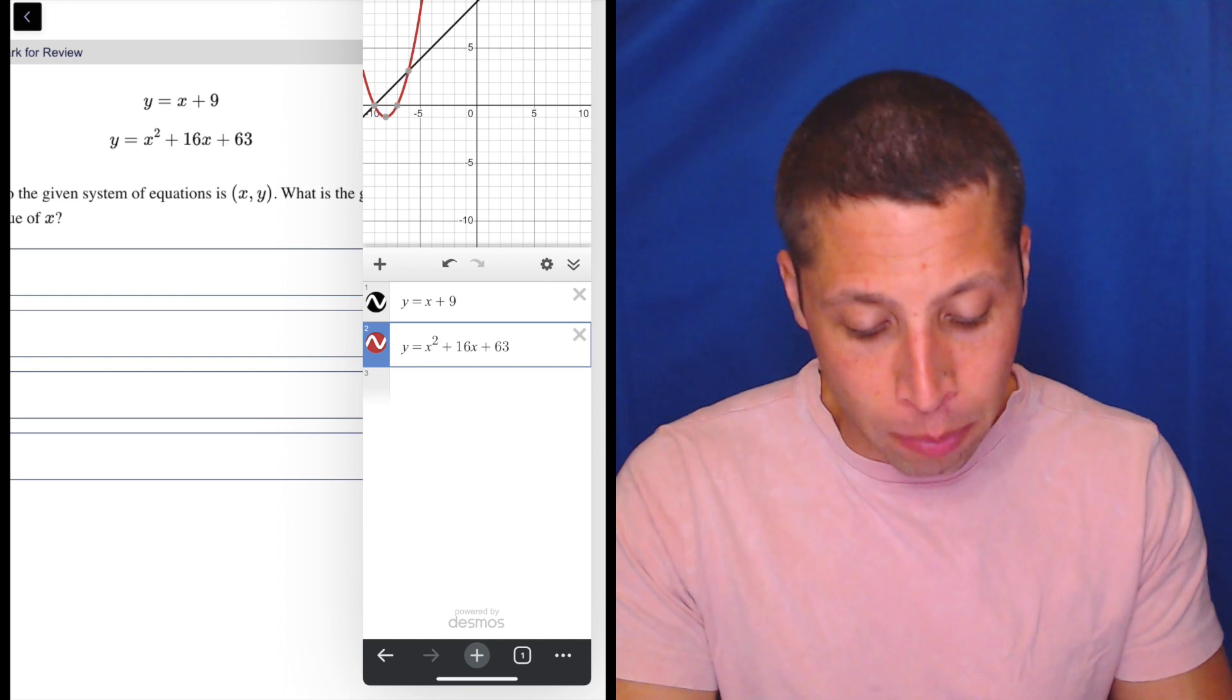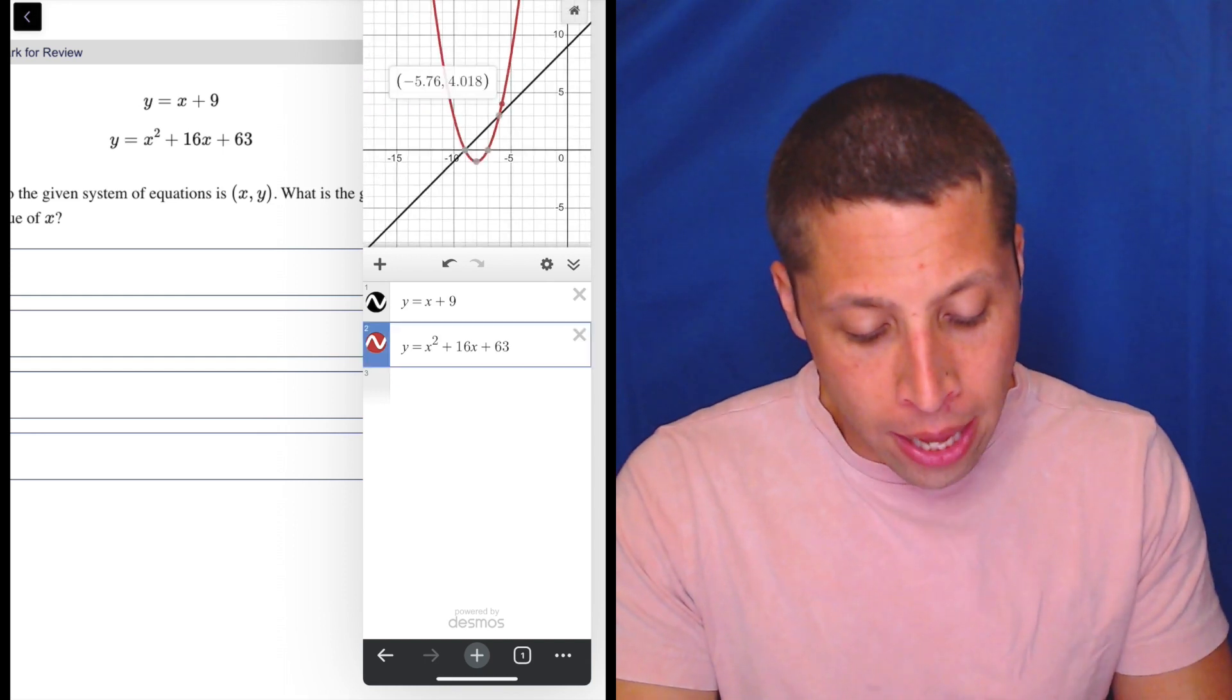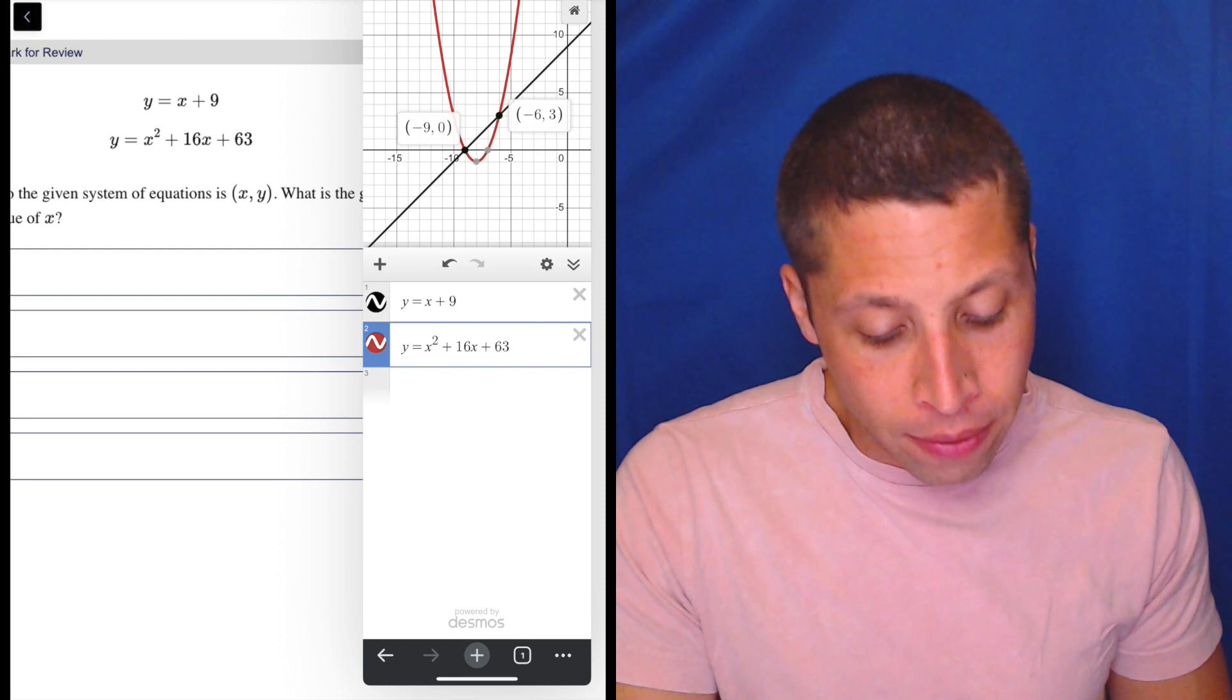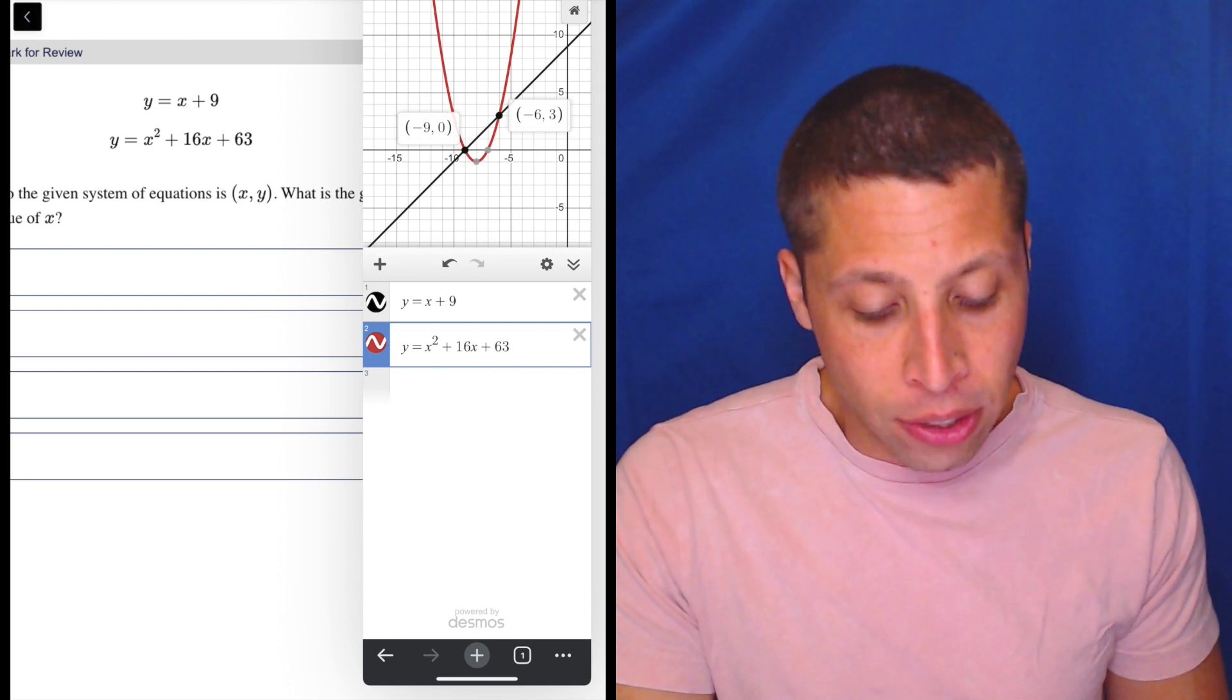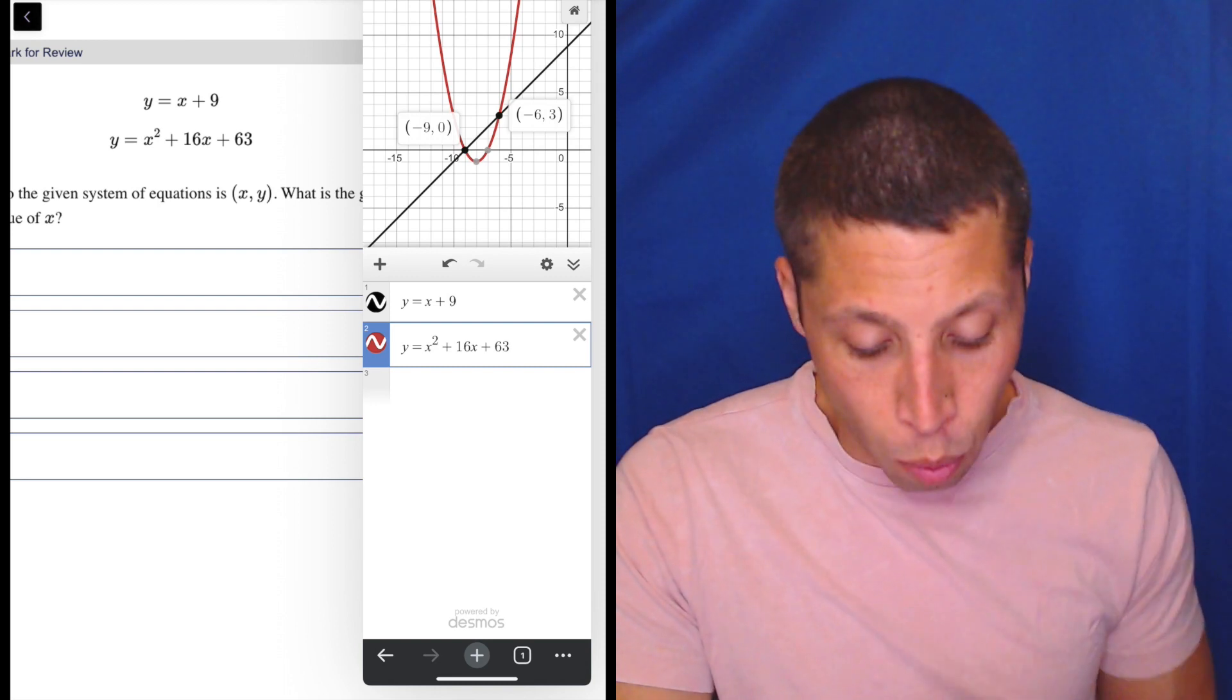You can see that we've got some points of intersection. Let me center them, and we can tap them, and we have negative nine, zero, and negative six, three.